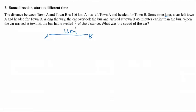The question also says that when the car arrived at town B, the bus had traveled 5 over 8 of the distance. That means when the car has reached town B, the bus is still behind and has only traveled 5 over 8 of the distance. That means this will be 5 units and the remaining will be 3 units — we take 8 minus 5, which is 3 units remaining.